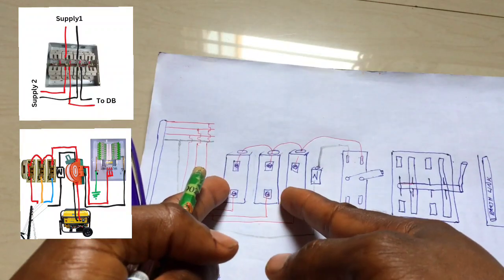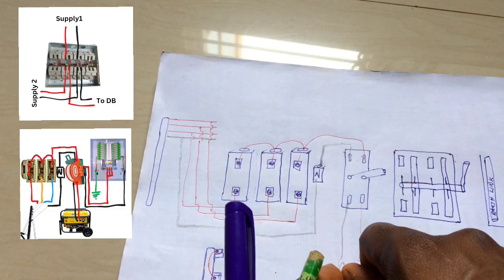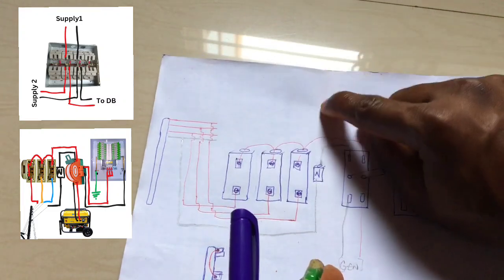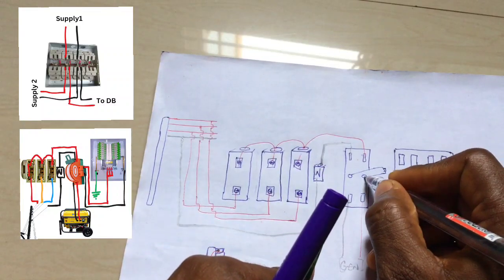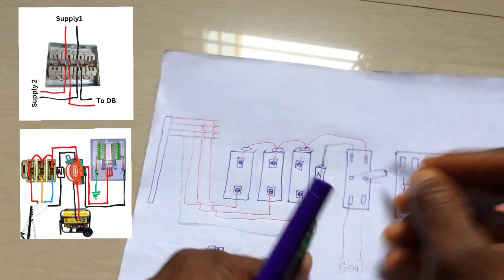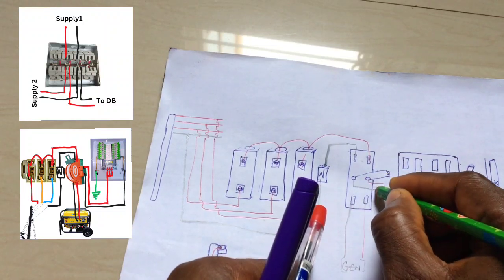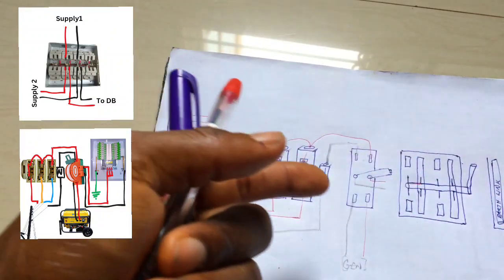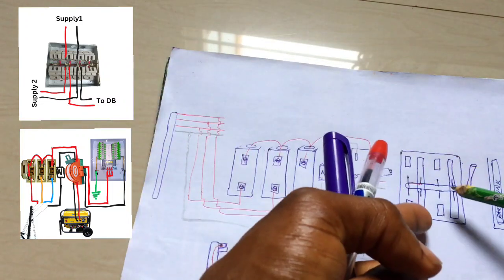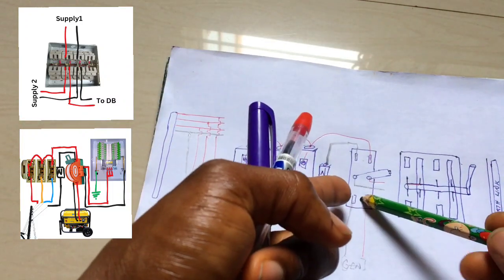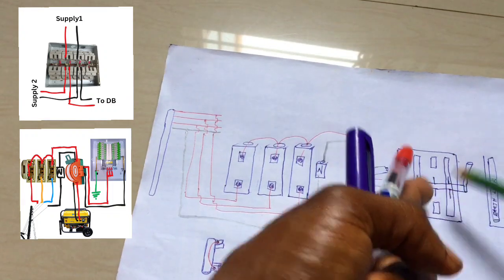If there is no power from the public grid, you bring the switch down and use the alternative power supply. If there is power from the public grid, you take it up. From here, live goes to your building and neutral goes to your building — this goes to your distribution board. This changeover is optional; you use either the knife switch or the gear changeover.